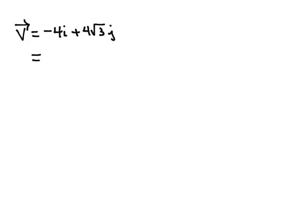So I'm going to first write vector v in component form. In component form, vector v would be negative 4, 4 square roots of 3.